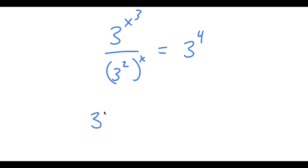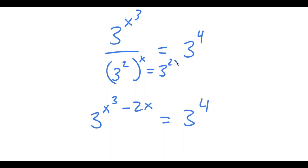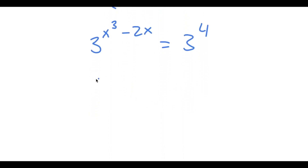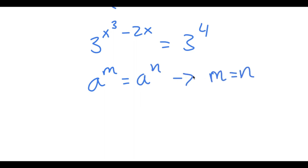This is the same thing as 3 to the power of x³ minus 2x, equal to 3 to the power of 4, because 3 to the power of 2 to the power of x equals 3 to the power of 2x. Now, if I have something in the form a to the power of m equal to a to the power of n, then m is equal to n.